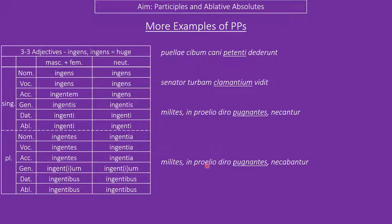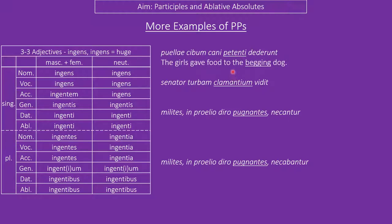Here are some sentences. Pause if you want to test yourself. The girls gave food to the petenti cani — they obviously describe each other. Peto means 'I beg' or 'look for', so the girls gave food to the begging dog.